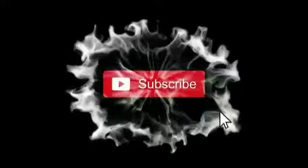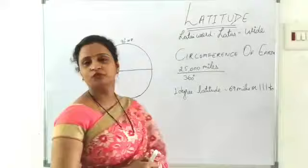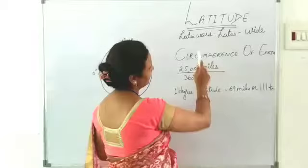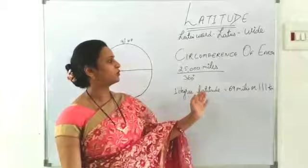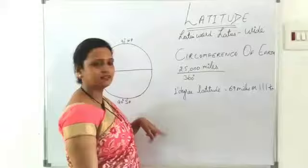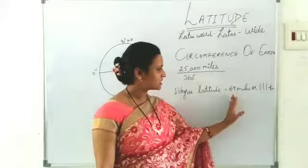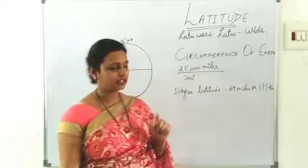Now let's study about latitude first. Latitude is derived from the Latin word 'latus' which means wide. The circumference of the earth is 25,000 miles. If we divide it by 360 — a complete circle — then 1 degree of latitude is equal to 69 miles or 111 kilometers.